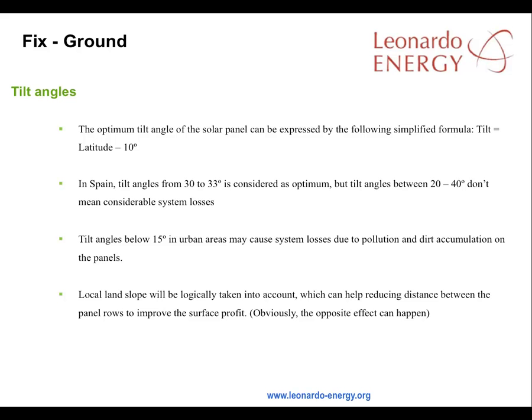The optimum tilt angle of a solar panel can be expressed in a simple formula: tilt is equal to latitude minus 10 degrees. In Spain, tilt angles from 30 to 33 degrees are considered the optimum. But tilt angles anywhere between 20 and 40 degrees will not result in considerable system losses. Tilt angles below 15 degrees in urban areas may cause system losses because of pollution and dirt accumulation on the panels.